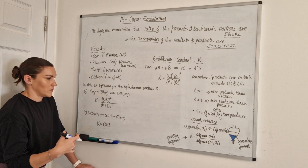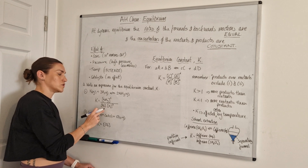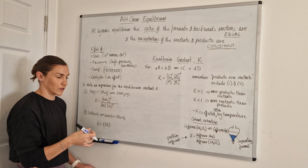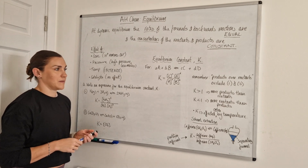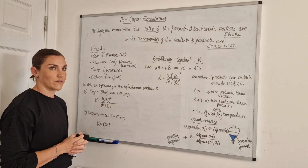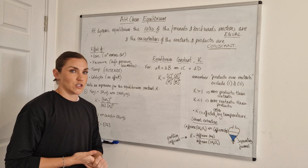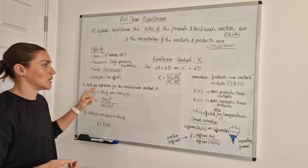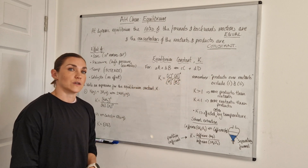You can also be given an equilibrium constant value and the concentrations of some reactants or products, and asked to find the concentration of the missing substance. To do this, write your equilibrium constant expression, plug in the known values, and solve for the missing variable. Anytime you see equilibrium expressions mentioned, this K equals expression is what they're referring to — always products over reactants, always excluding pure liquids and pure solids.